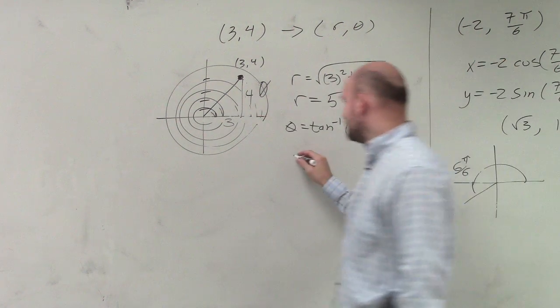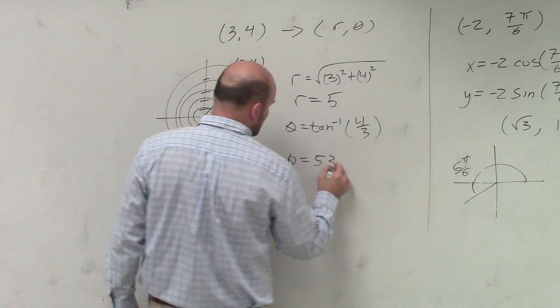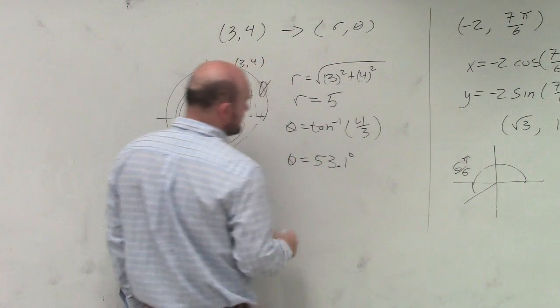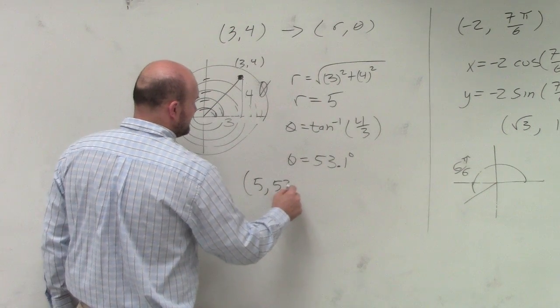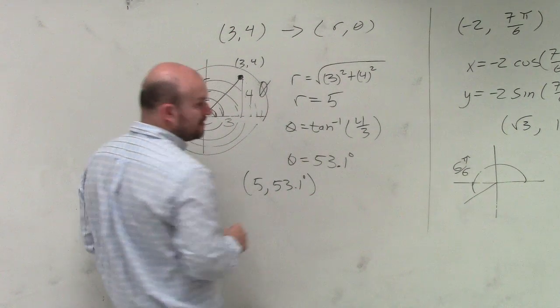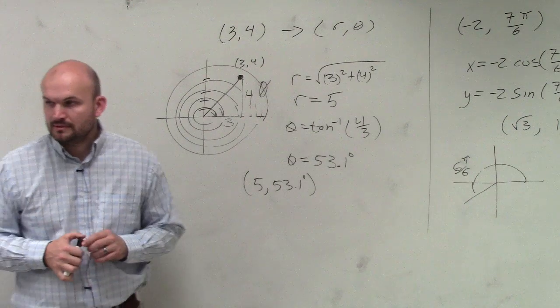And therefore, when you did this, you got 53.1 degrees. So we can say that this coordinate point is (5, 53.1°) in polar form.